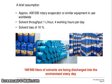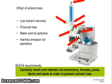Brief assumptions: approximately 4,000 rotary evaporators or similar equipment are used worldwide. Solvent throughput is 1 liter per hour for 4 working hours per day with a solvent loss of 10%. This means 1,600,000 liters of solvent are being discharged into the environment every day. The effects of solvent loss include low solvent recovery, financial loss, and water and air pollution. Carefully check and maintain all connectors, threads, joints, and seals in order to prevent solvent loss.